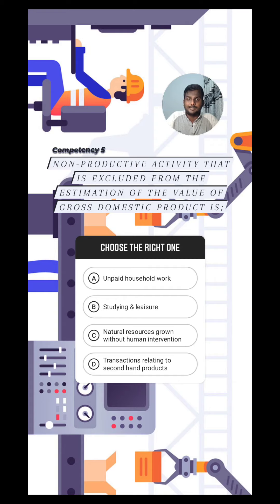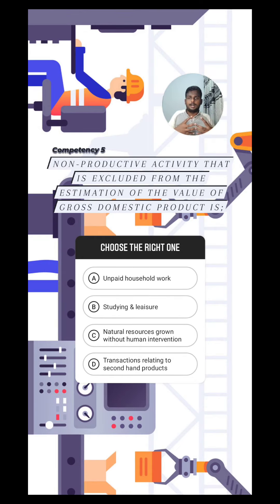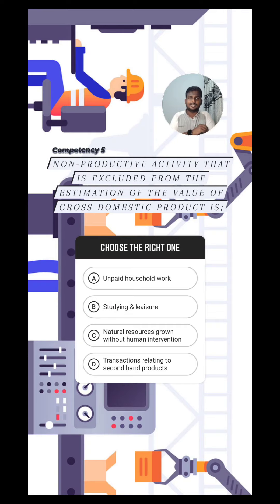Those are productive activities but not added to GDP. But the question is about a non-productive activity that is not added to GDP. Look at answer number four: transactions relating to second-hand products. Whenever you buy a product for the first time, you are creating value — buying a brand new car means value has been created, so you add it to GDP. But when you sell that same car to someone else, there's no new value created by that transaction. So whenever you sell or buy something second-hand, that transaction cannot be added to GDP because it's a non-productive activity.